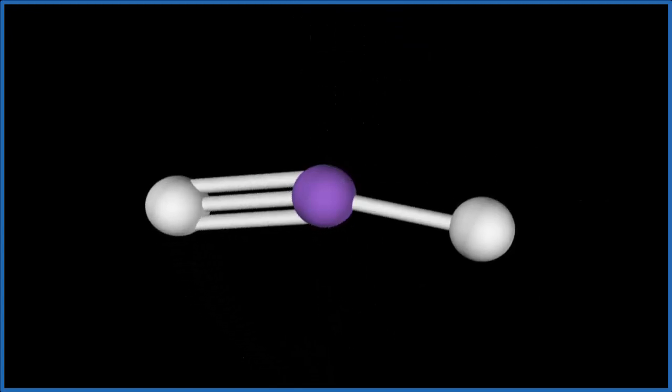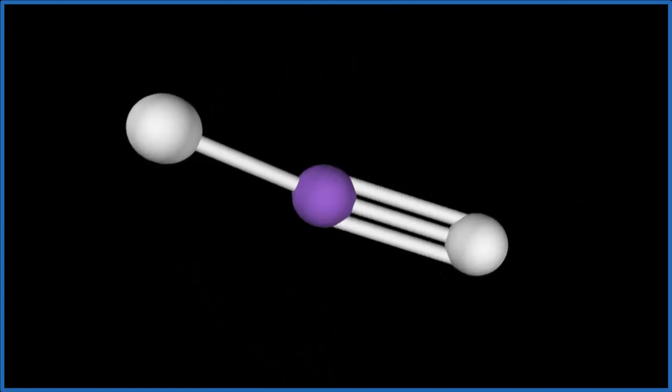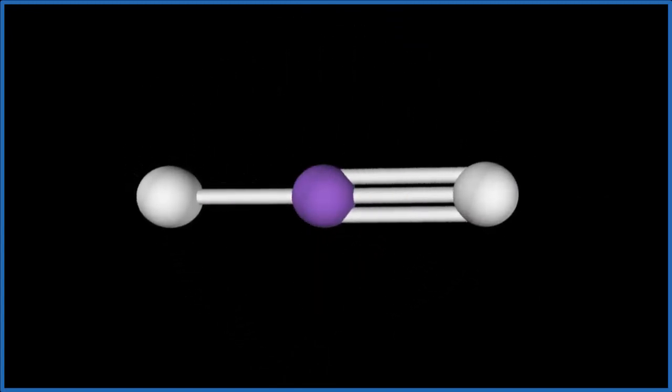And you can see they spread out to be as far away as they can from each other. That gives us a linear electron geometry. Since there aren't any lone pairs on the central carbon, that's also the molecular geometry.